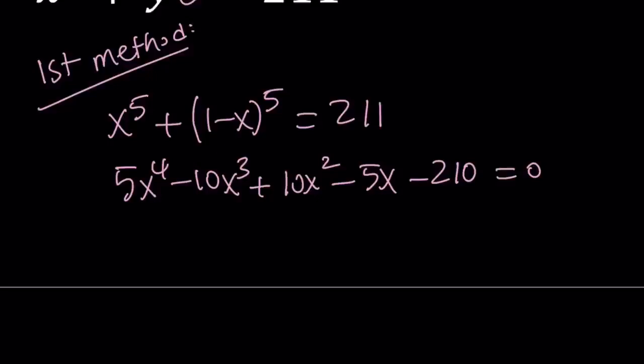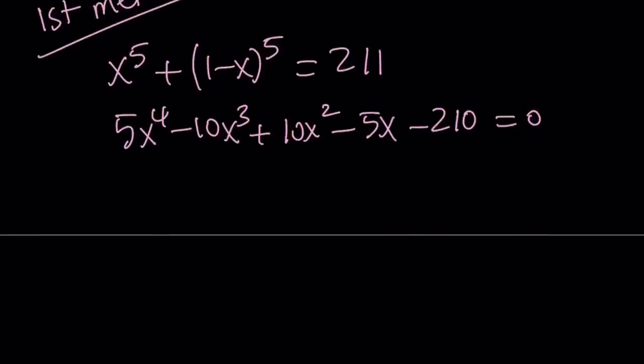But we can go ahead and simplify it because all the coefficients are multiples of 5. So we can go ahead and divide both sides by 5 without changing the roots. And that gives us the following equation.